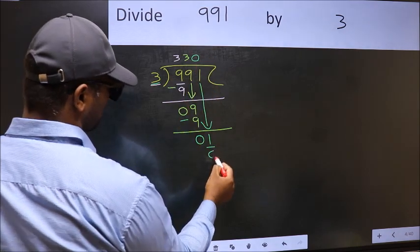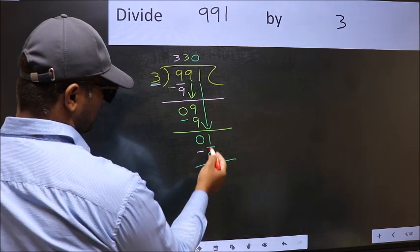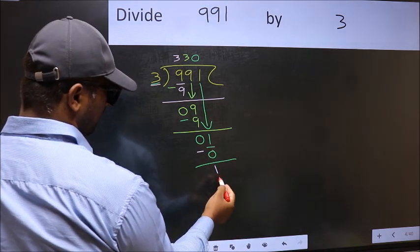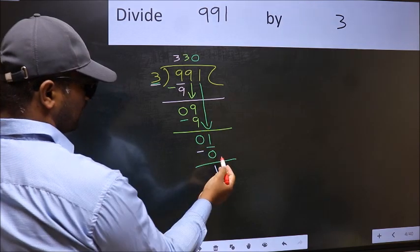So 3 into 0, 0. Now you should subtract. 1 minus 0, 1. Over here, we did not bring any number down.